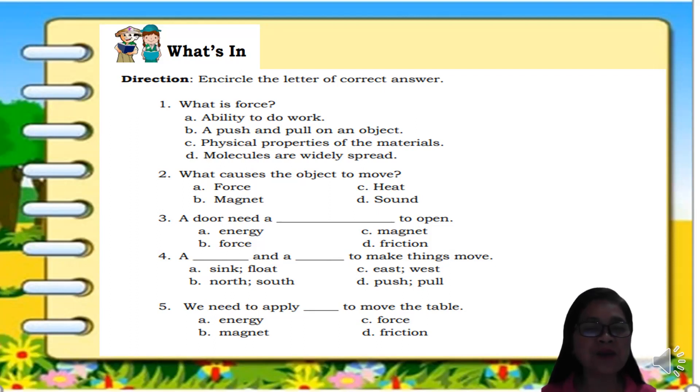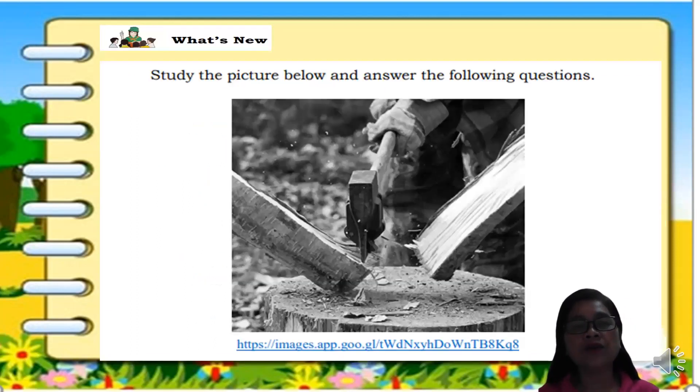The answer is letter D. Last number, number five, we need to apply blank to move the table. A. energy, B. magnet, C. force, D. friction. The answer is letter C, force. If you got five correct answers, then congratulations. It indicates that you learned much from your lesson about force in grade three. Let's now have our activity for the new lesson.